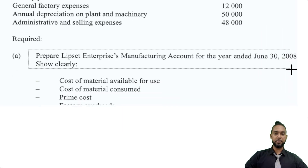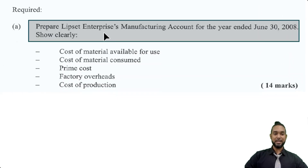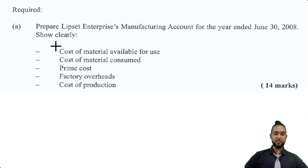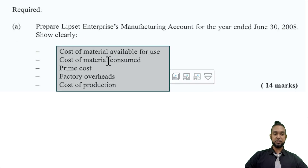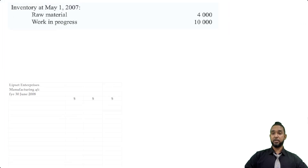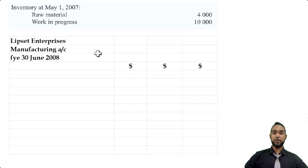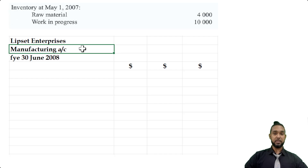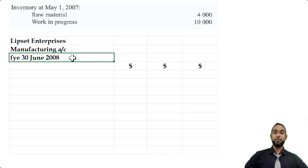The first thing we are required to do in part A is prepare Lipset Enterprise's manufacturing account for the year ended June 30th, 2008, showing clearly: cost of material available for use, cost of material consumed, prime cost, factory overheads, and cost of production. We're going to start by properly heading up our statement — name of the entity: Lipset Enterprises; name of the statement: manufacturing account; and the period: FYE (for the year ended) 30th June 2008.